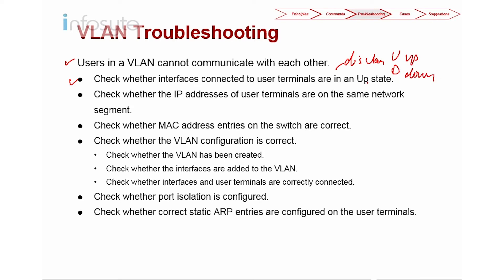That's the first thing you need to do. Second, check whether the IP address of the user interface is on the same network segment or not. Sometimes the user is getting DHCP and there's a wrong configuration on DHCP. Or if it's static, make sure that the VLAN and IP mapping is correct.